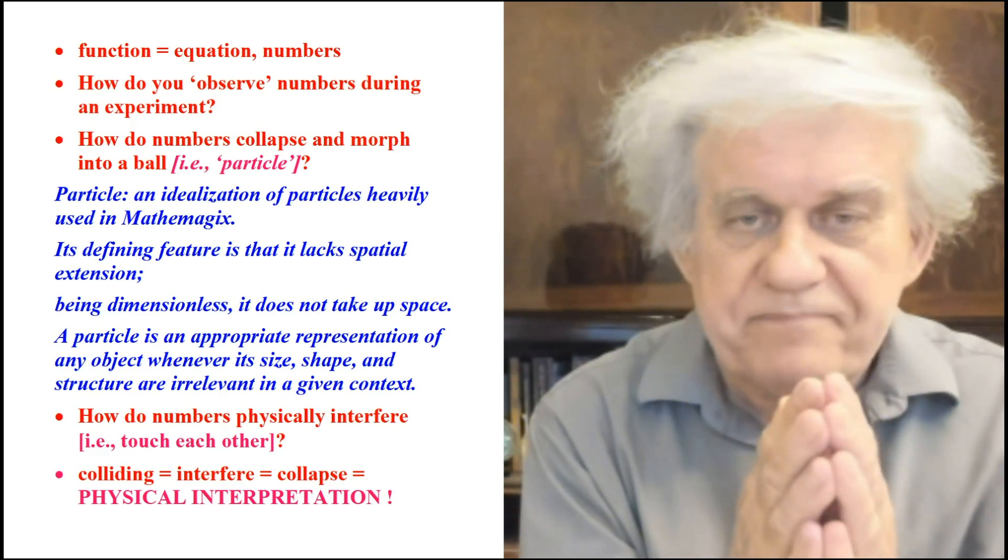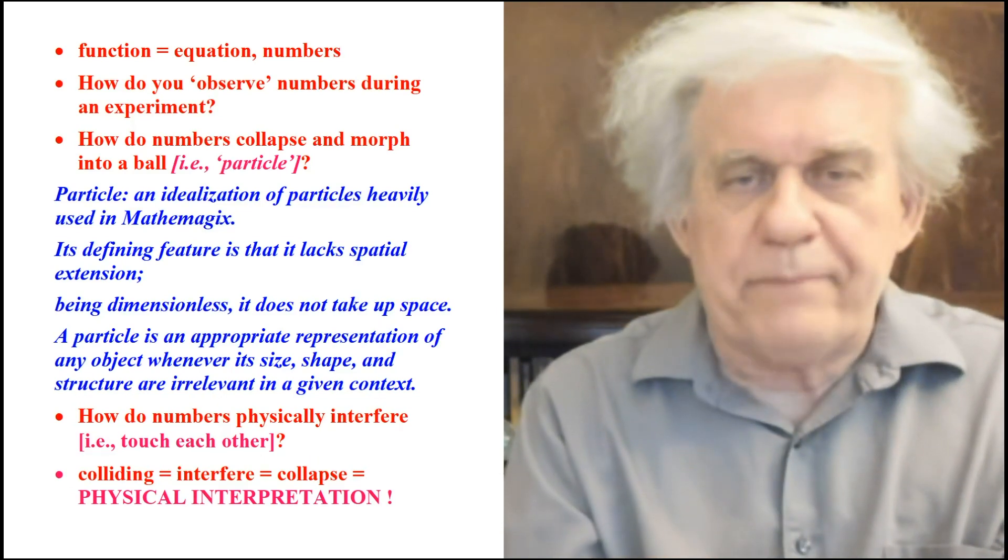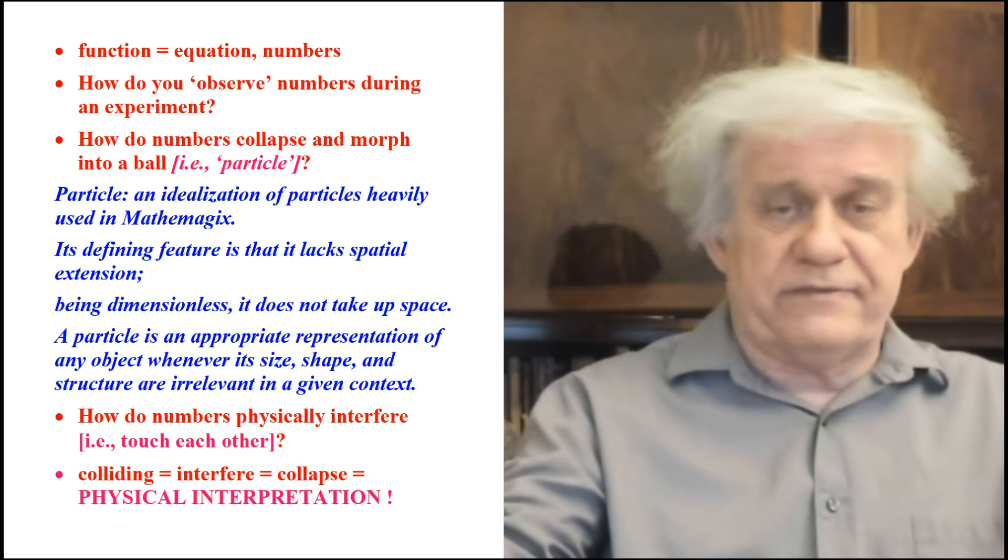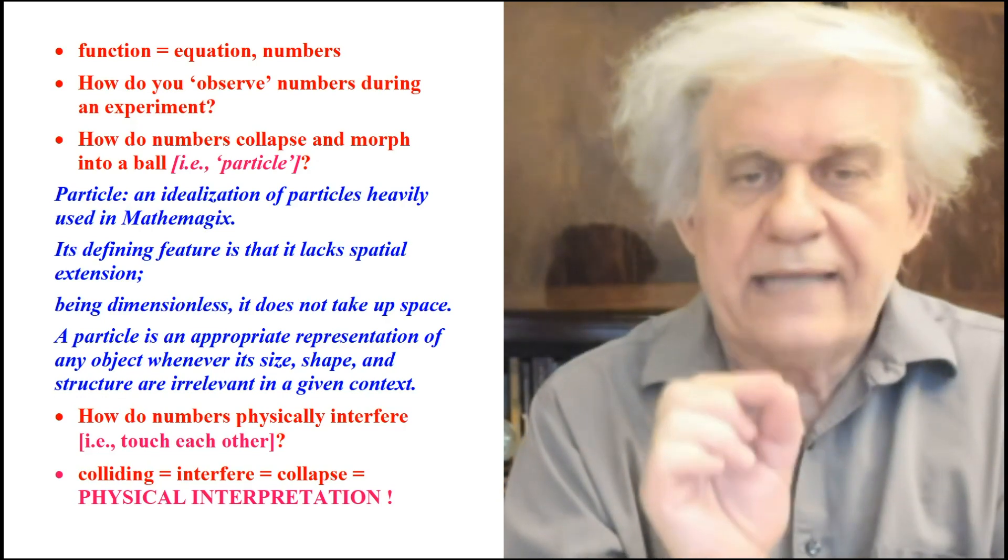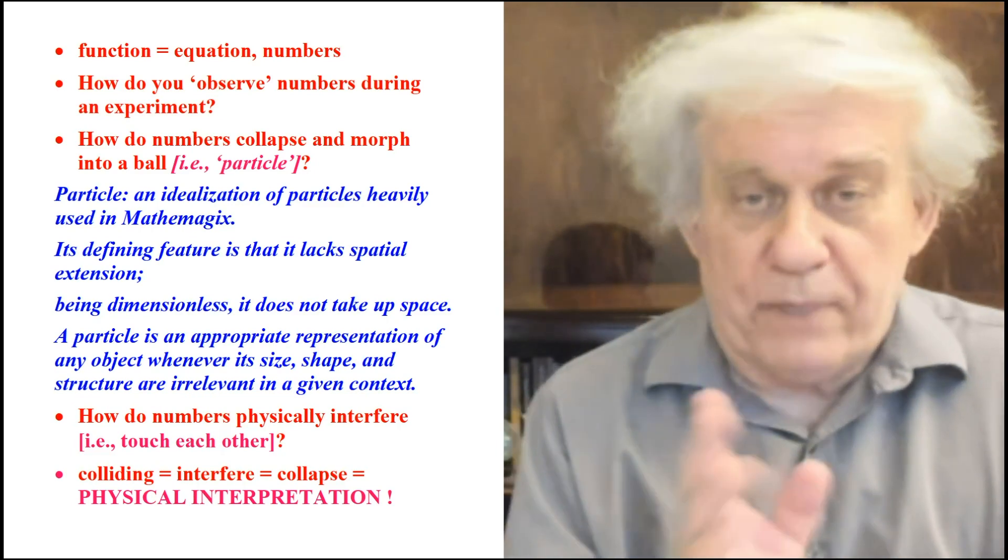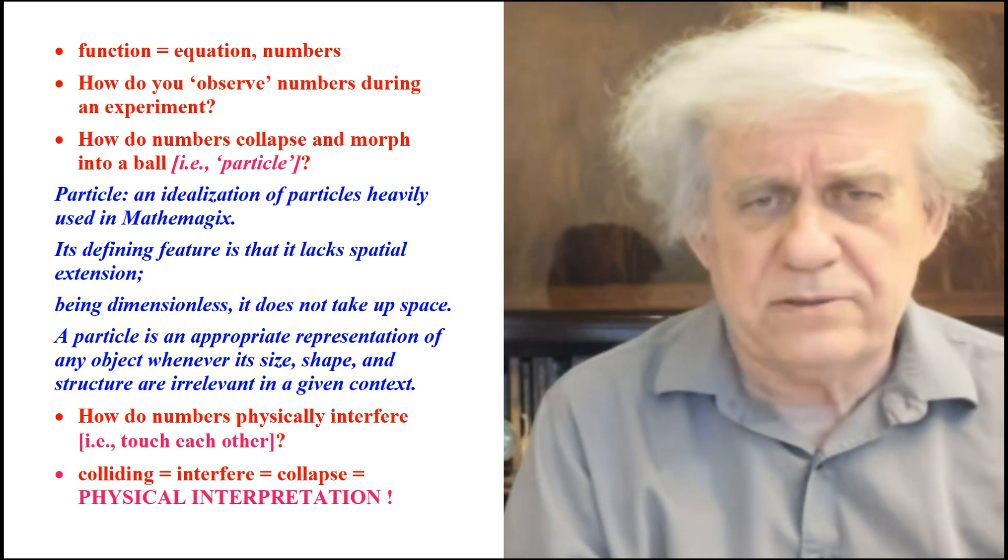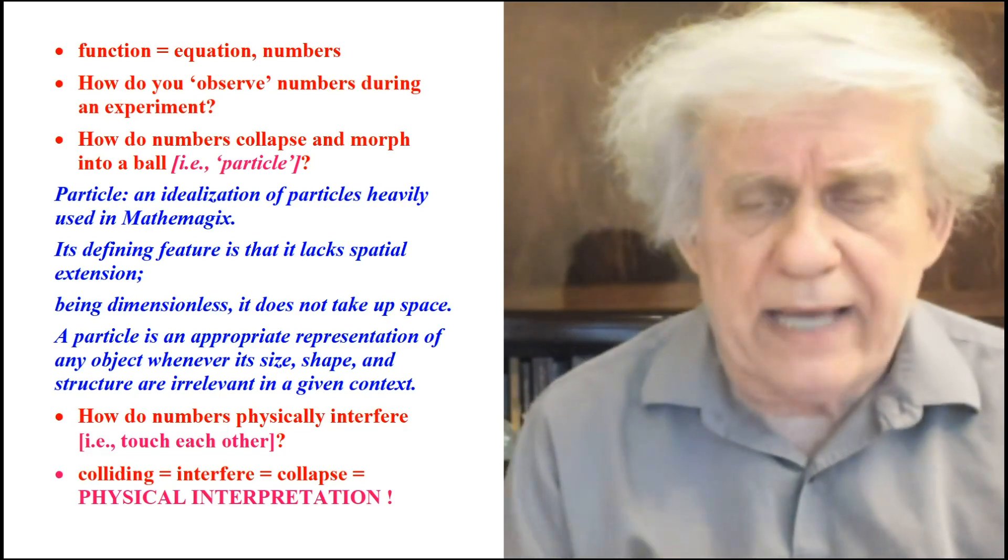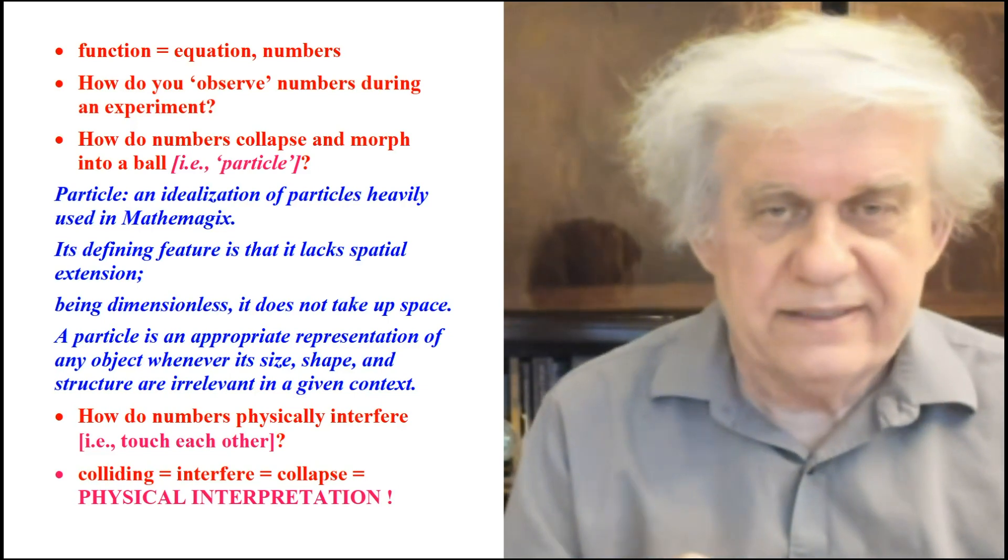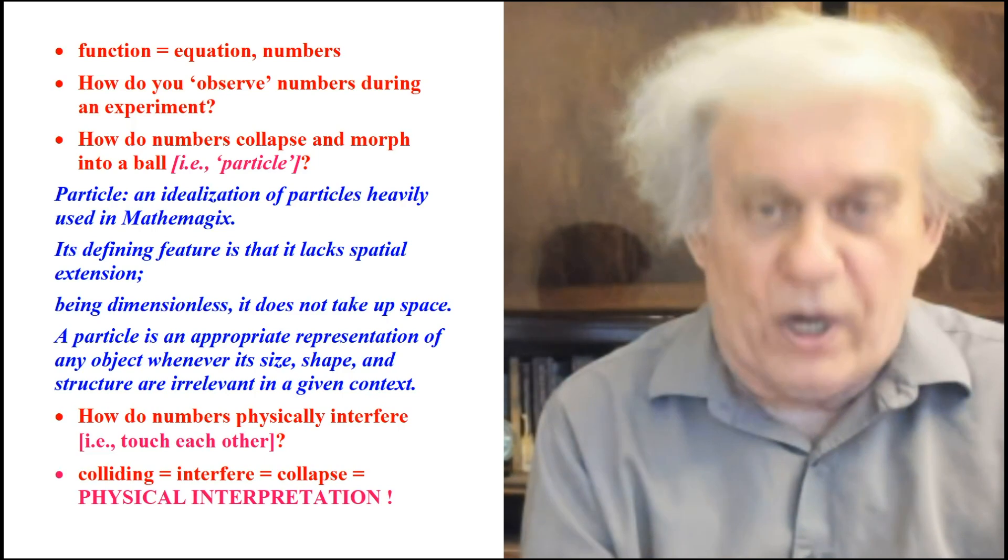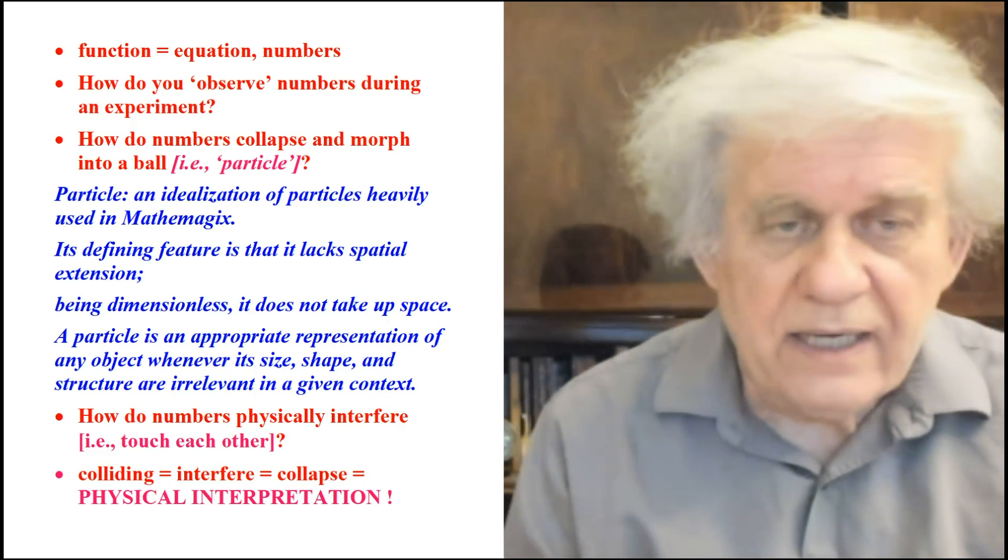They say that the wave function collapses to a point. Why? Because when they take the measurement, they take a measurement at a given spot, at a given point, and they say what happened was that this wave function, which is spread out throughout the universe, all the way to the edge of space time, suddenly collapses, concentrates all of a sudden to a dot. And that dot is what they're going to call a particle. So let's look at what a particle is. This is from the Wikipedia. An idealization of particles heavily used in mathematics, it's defining feature is that it lacks spatial extension being dimensionless. It does not take up space. We're talking about nothing. Yeah. Why? Because we're talking about a concept. They're talking about a number, a quantity. That's what a particle is.